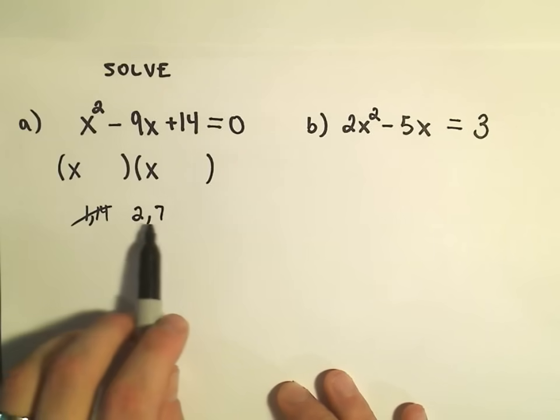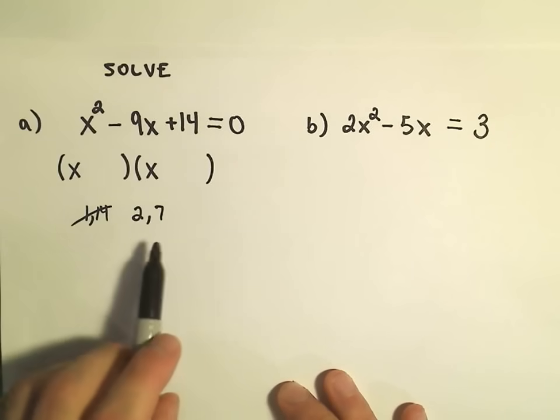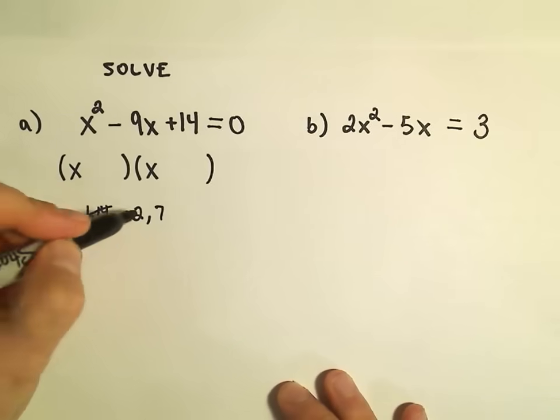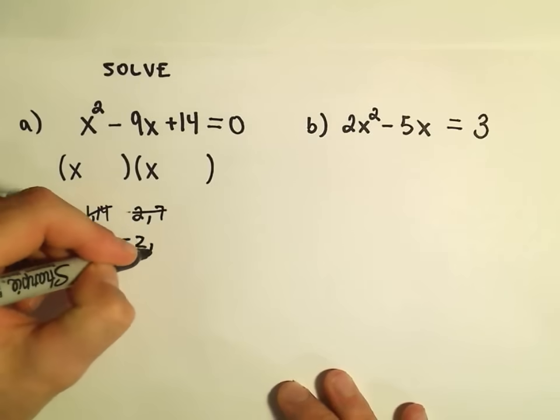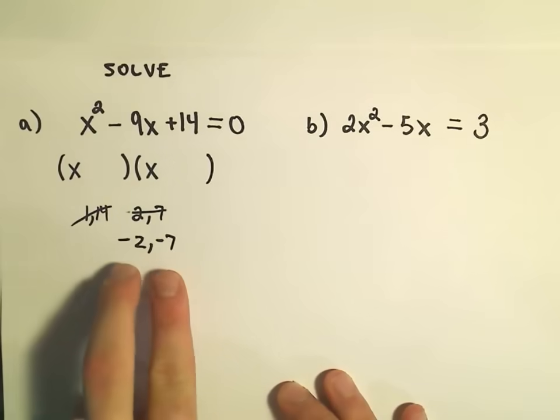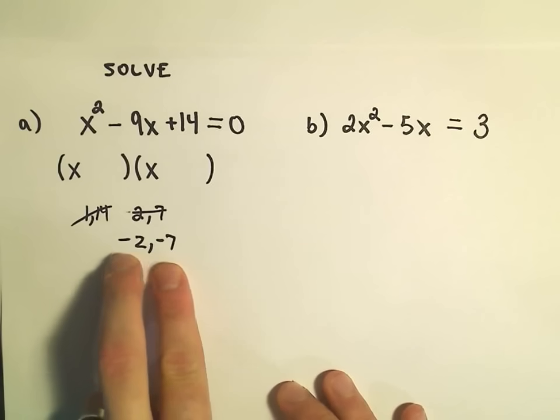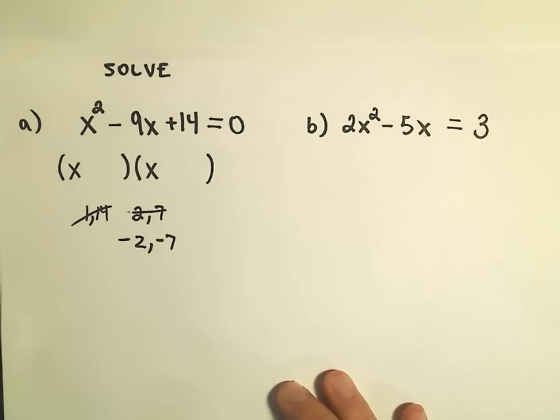2 and 7, if I add those, right now I would get positive 9. But if we make them both negative, so negative 2 and negative 7, those still multiply to positive 14, but now they'll give us the correct sign in the middle.